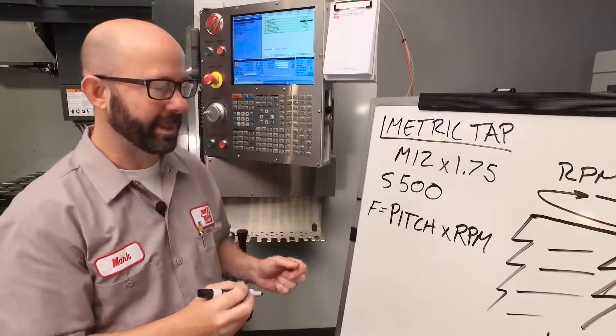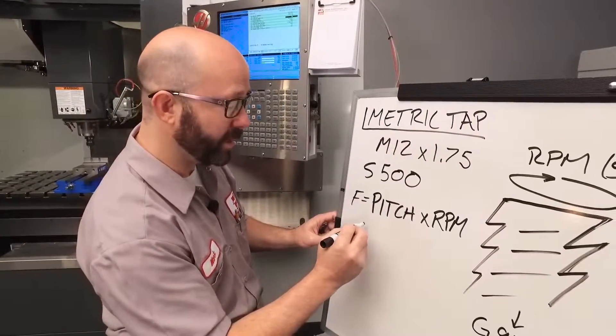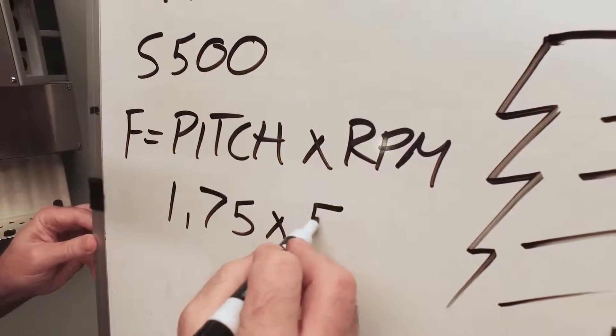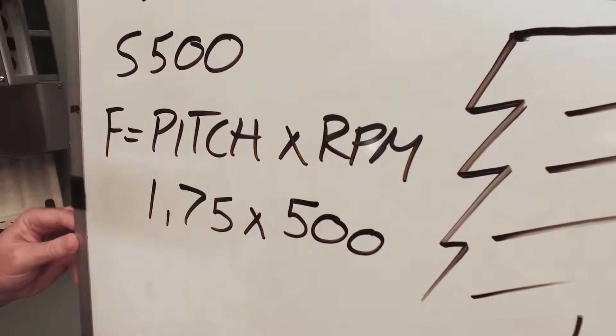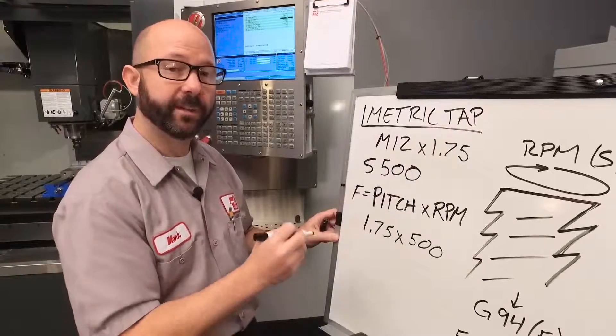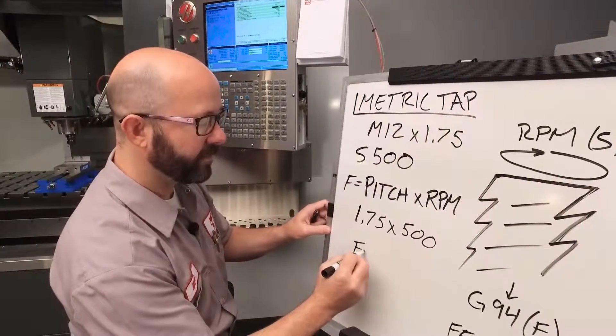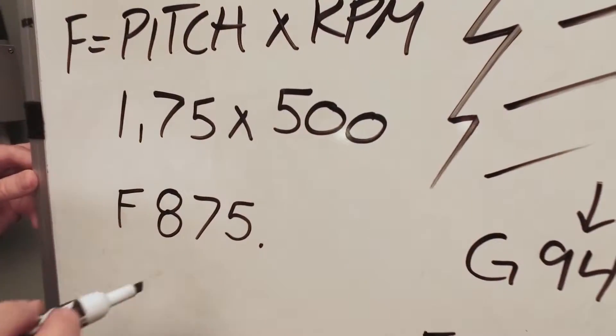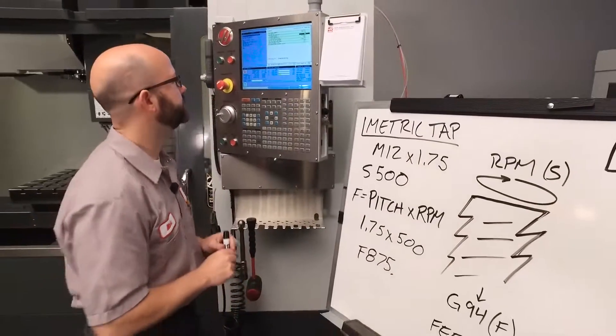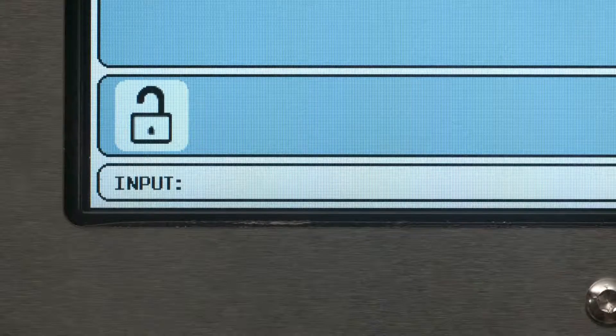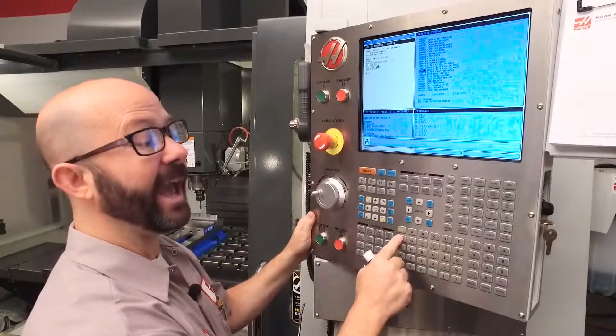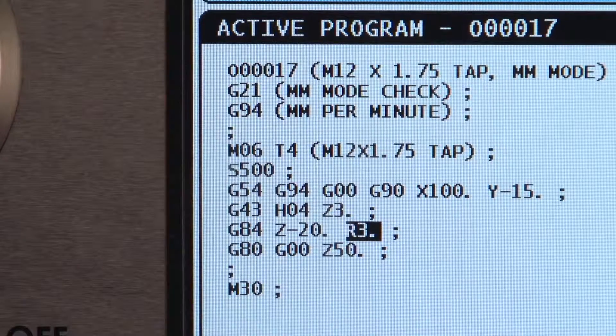Let's go ahead and fill in the formula. Pitch, 1.75, times RPM, which is 500. When we run that through a calculator, we're going to get a feed rate of F875. Let's go ahead and enter that into our program. I'm going to enter my RPM, S500, and my feed rate, F875.